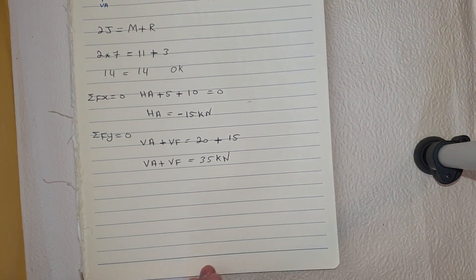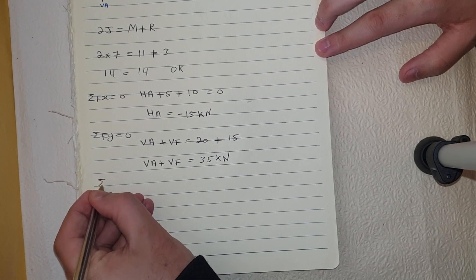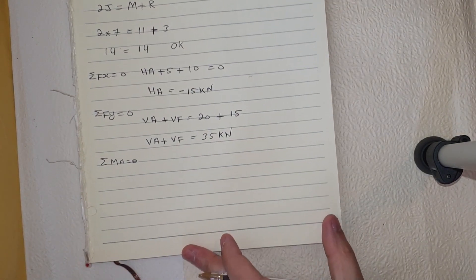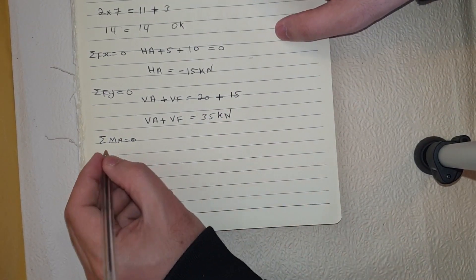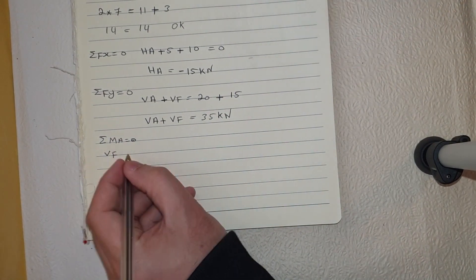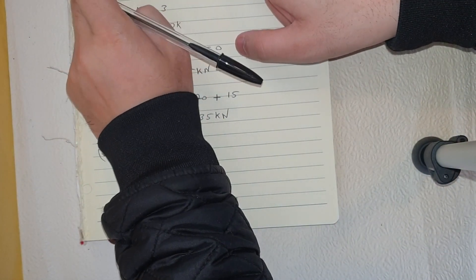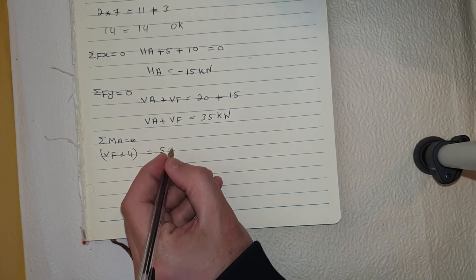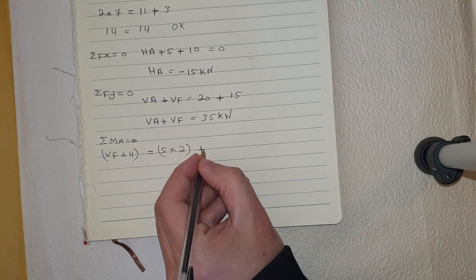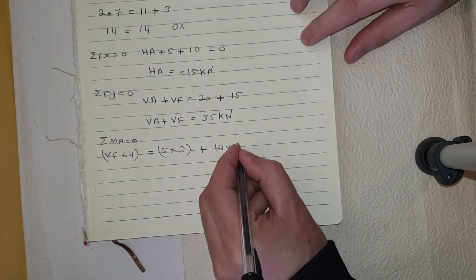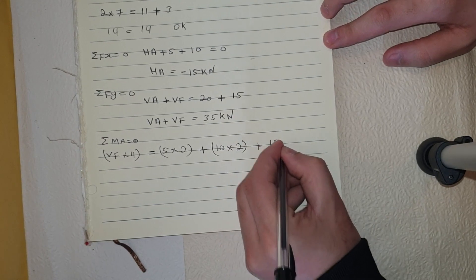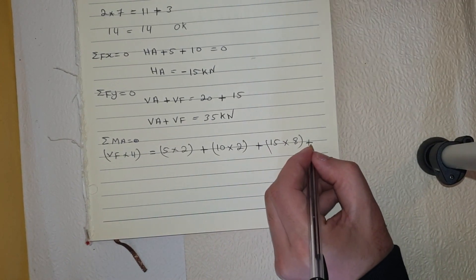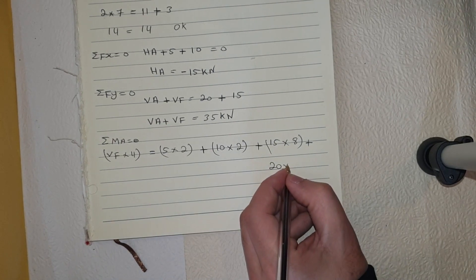Taking the moment at point A equal to zero: VF times a distance of 4 m equals 5 times 2 m, plus 10 times 2 m, plus 15 times 8 m (4+4), plus 20 times a distance of 2 m (which is 4 m).